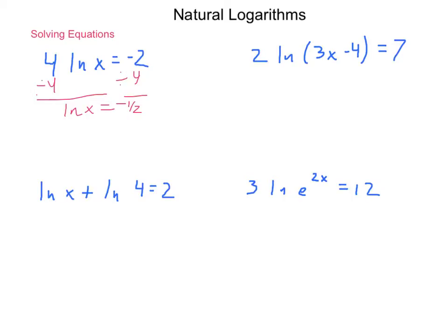Then, in order to find X, we're going to raise, use the definition of logarithms, and have X equals E to the negative 1 half power. Now, calculating that, we come out with X being approximately equal to 0.607.